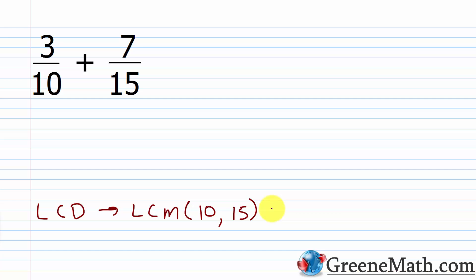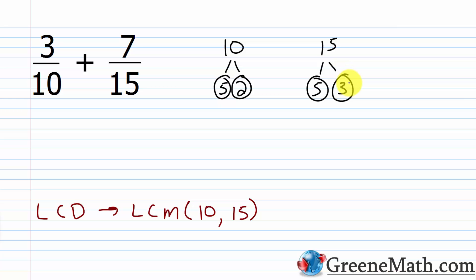To find the LCM, factor each number: 10 is 5 × 2, and 15 is 5 × 3. Every prime factor from each factorization goes into your list, but duplicate prime factors only go in the largest number of times they occur in either factorization. Five occurs once in each, so just one factor of 5 goes in. Two appears here but not in 15, so throw it in. Three appears in 15 but not in 10, so throw it in too.